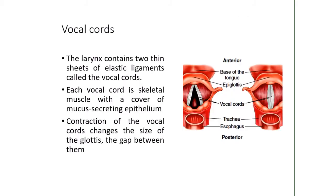Within the larynx you'll find your vocal cords — thin sheets of elastic ligaments made up of skeletal muscle, meaning you can control them. We can control when to talk and the pitch of the sound we make. They function like guitar or violin strings: if they are tighter, you get a higher pitch; if more loose, you produce a lower pitch sound. In order to create sound, you must be able to move air through the vocal cords.